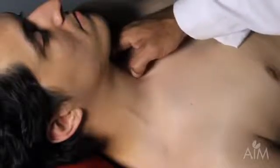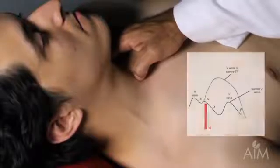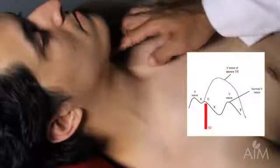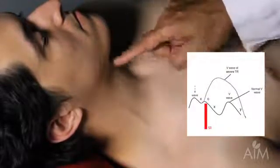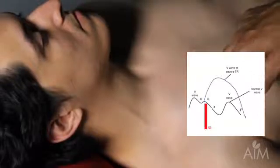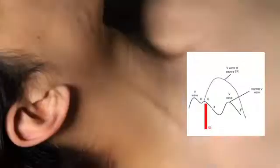If his heart rate is slow — which it is, he's going at about 65 or 66 a minute — you could actually identify the neck vein waves just by observing them coming in couplets.